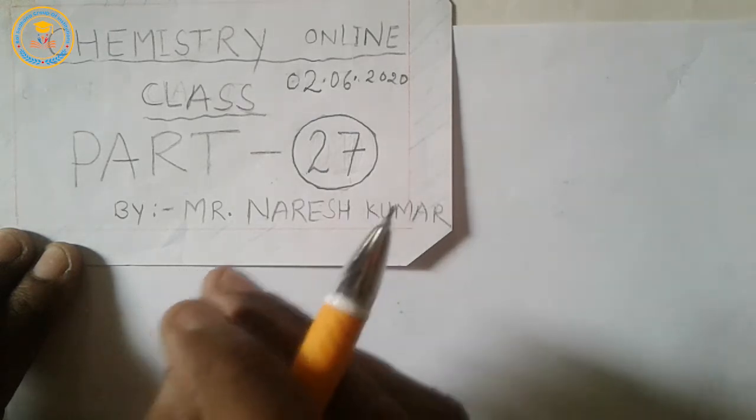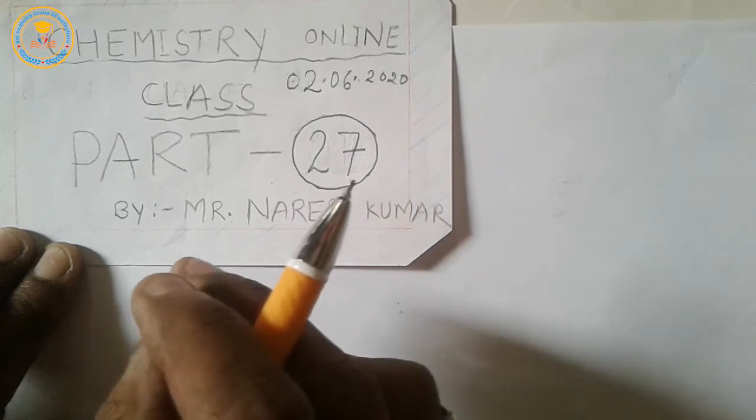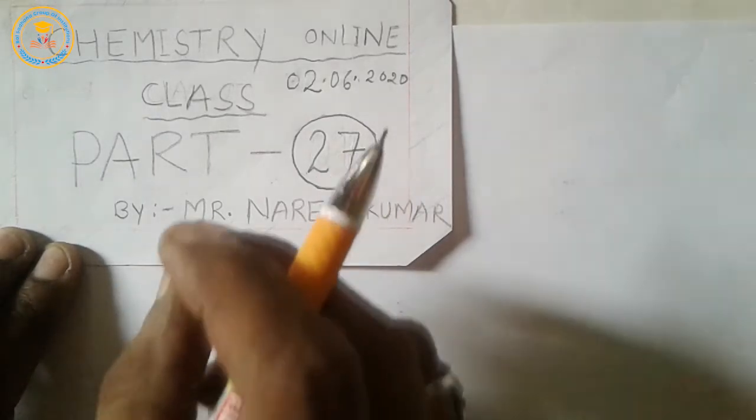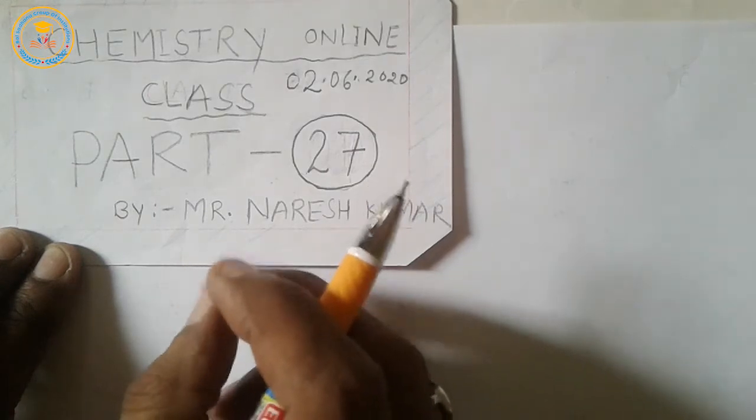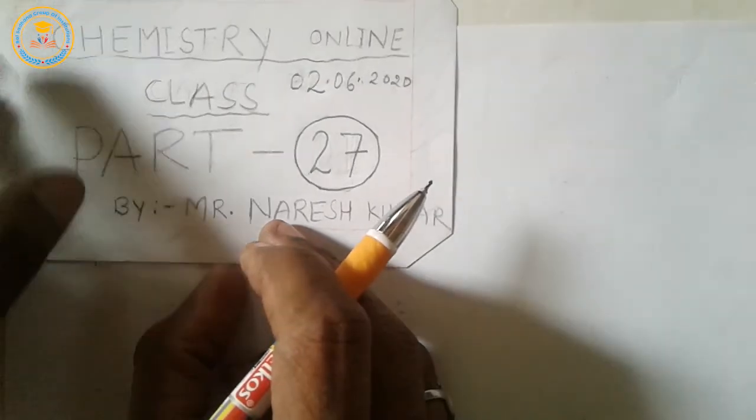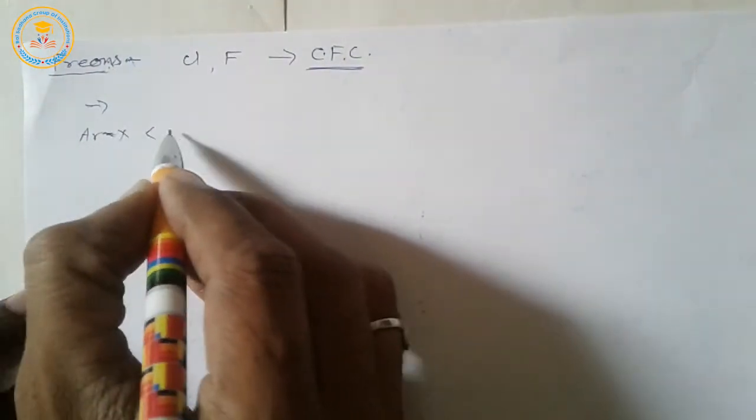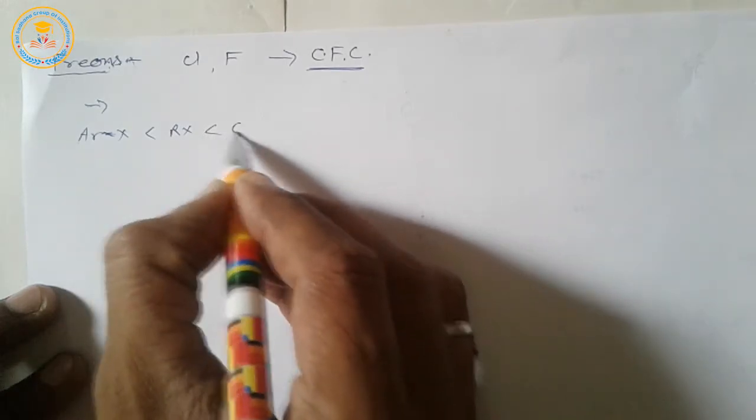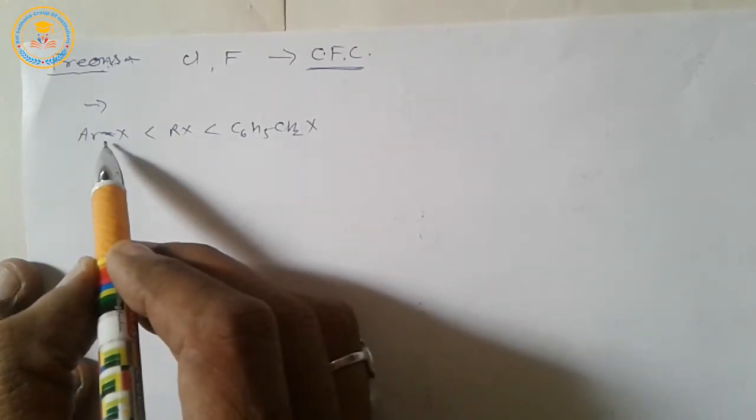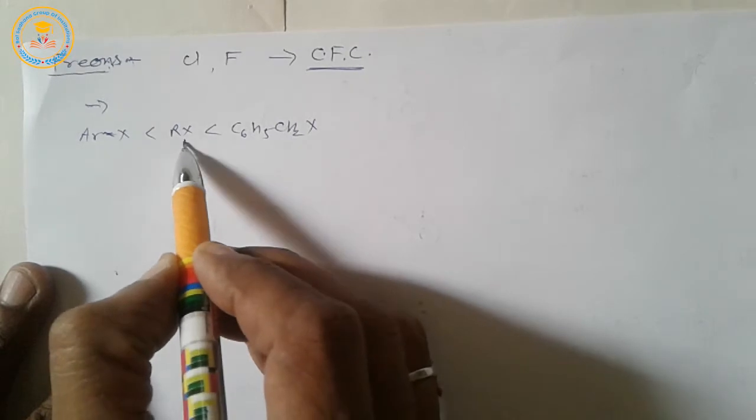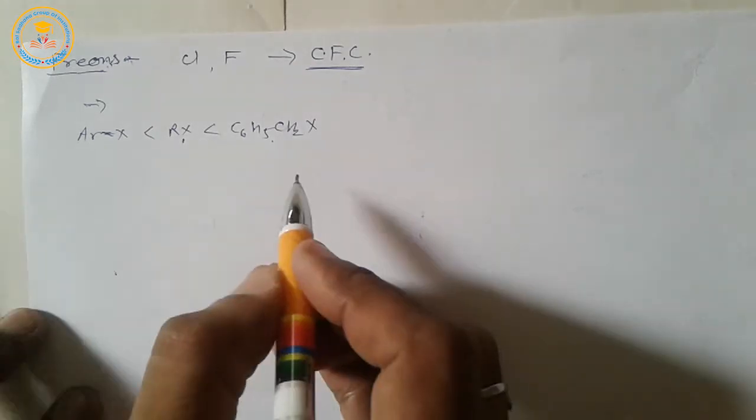Aryl halides are less reactive towards nucleophilic substitution reaction, so it occurs in drastic conditions. The reactivity order of different mono-halogen derivatives towards SN reactions is as follows.